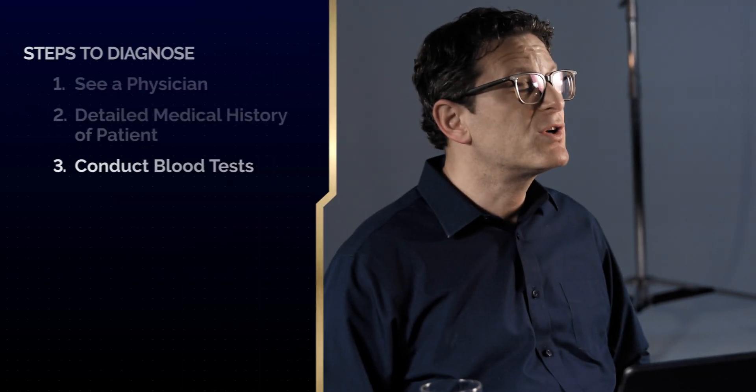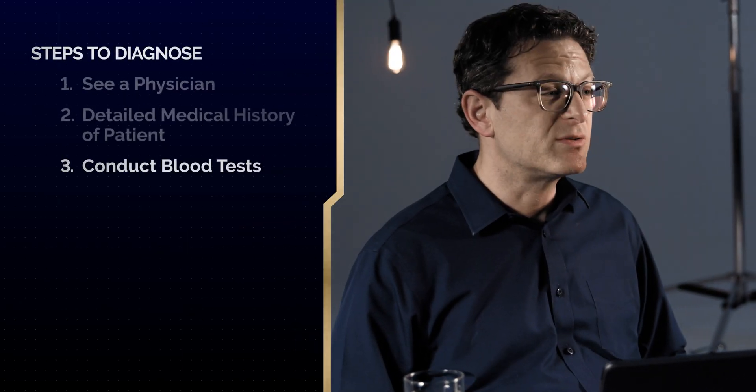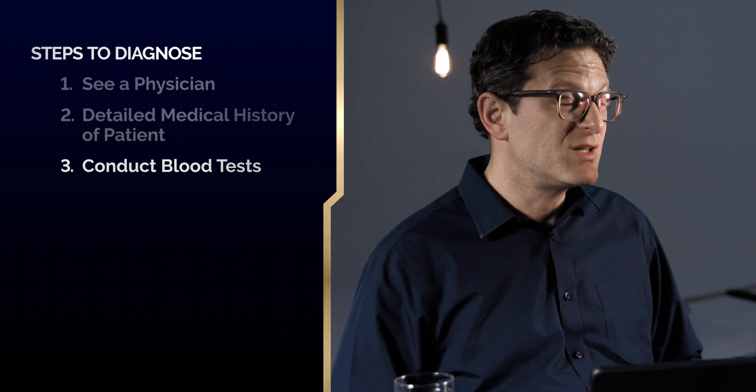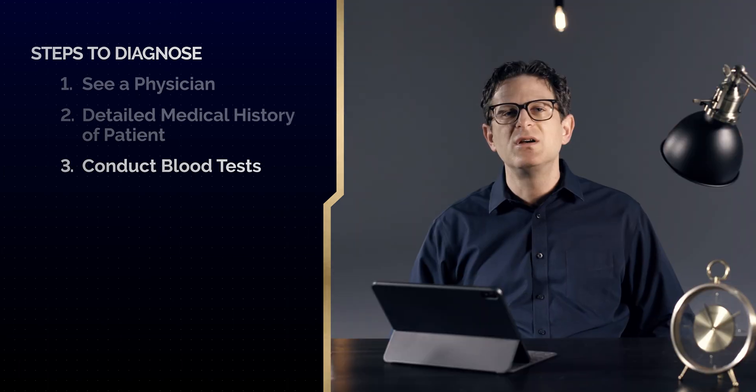Once we take the history, we move to specific testing. First, we do blood tests, which are important to rule out other causes. People with vitamin deficiencies such as B12, or someone with a thyroid problem, may mimic cognitive decline due to dementia. We do a variety of blood tests, and about five to eight percent of the time we find something in the blood that could be mimicking a dementia.